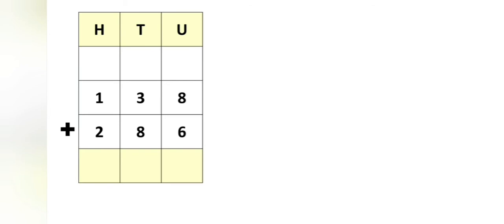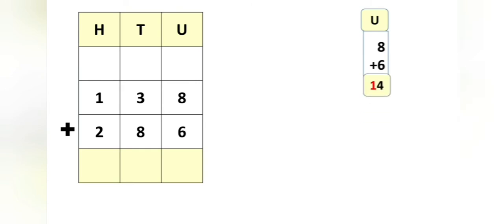Now let us solve one more example: 138 plus 286. So let us add the units place first. 8 plus 6 is equal to 14. We get the answer 14. In the number 14, we have 1 ten and 4 units. Now let us write 4 units in the units place.